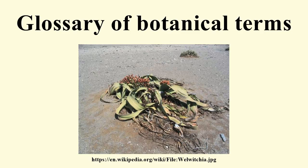Abbreviation A. For instance, A3+3 indicates 6 stamens in 2 whorls. Androgynophore: a stalk bearing both the androecium and gynoecium of a flower, above the level of insertion of the perianth. Androgynous: with male and female flowers in the same inflorescence. Andromonoecious: having bisexual and male flowers on the same individual.